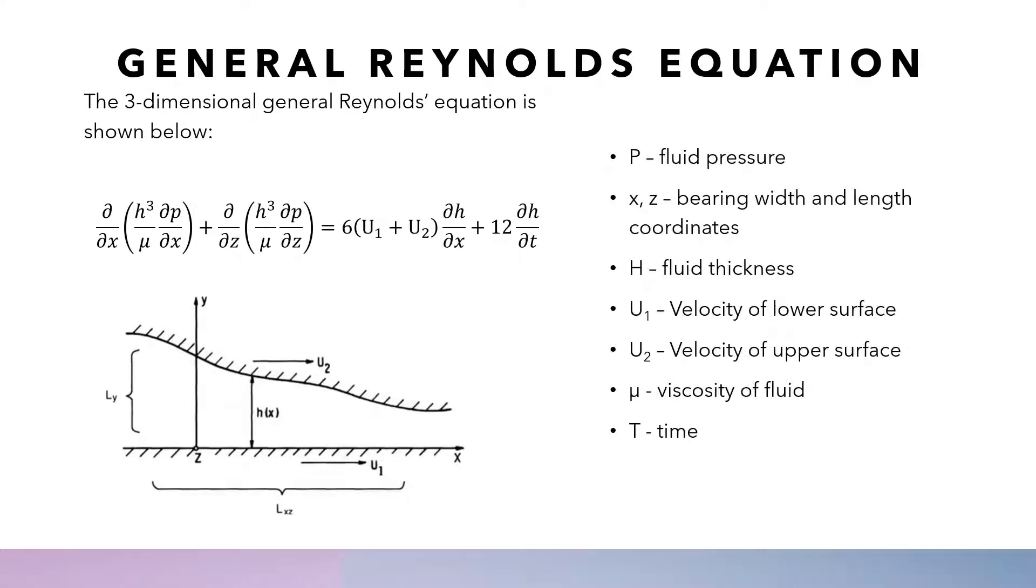The three-dimensional general Reynolds equation is shown below. Below the Reynolds equation we have a diagram which shows two surfaces moving with a lubricant in between them. The top surface is moving to the right with velocity U2 and the bottom surface is moving with velocity U1.